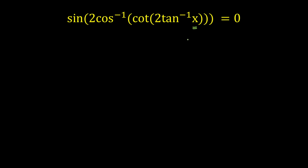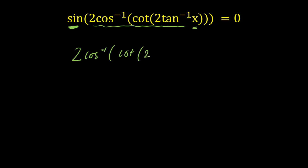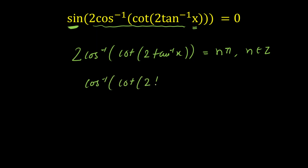I see many trigonometric ratios and inverse ratios in this equation. How do we deal with this kind of problem? The first function is sin. Sin of any angle is equal to 0 when the angle is an integral multiple of π. So our angle 2·cos⁻¹(cot(2·tan⁻¹(x))) is equal to nπ/2.